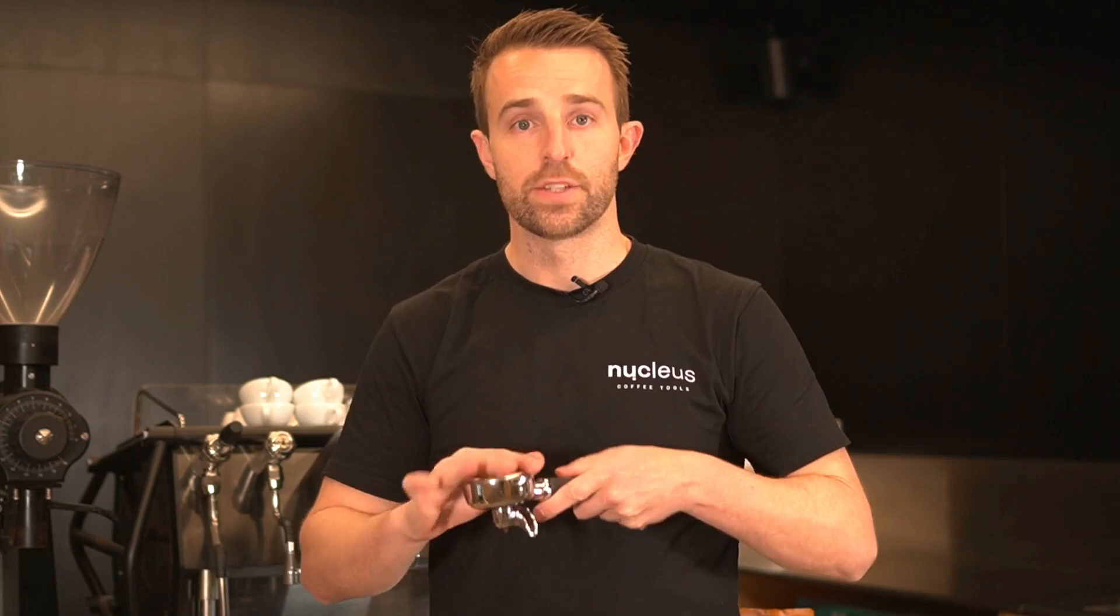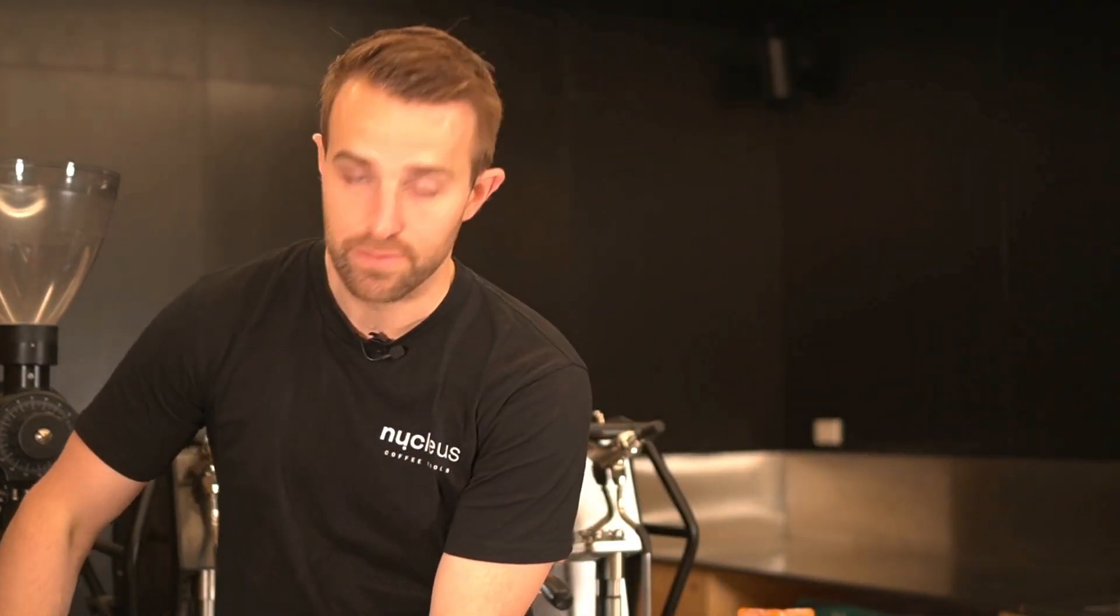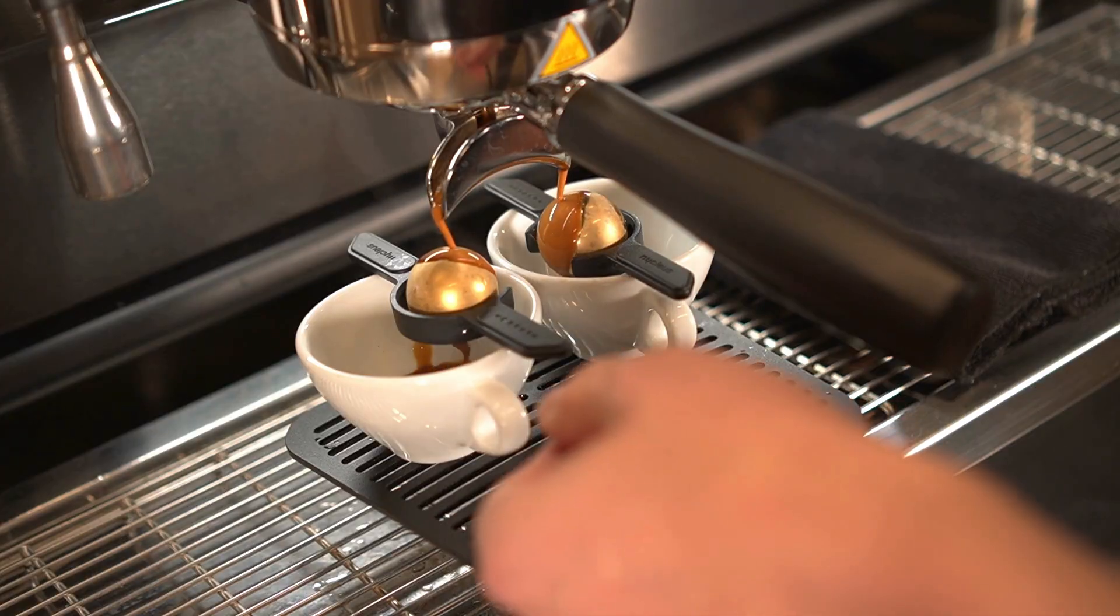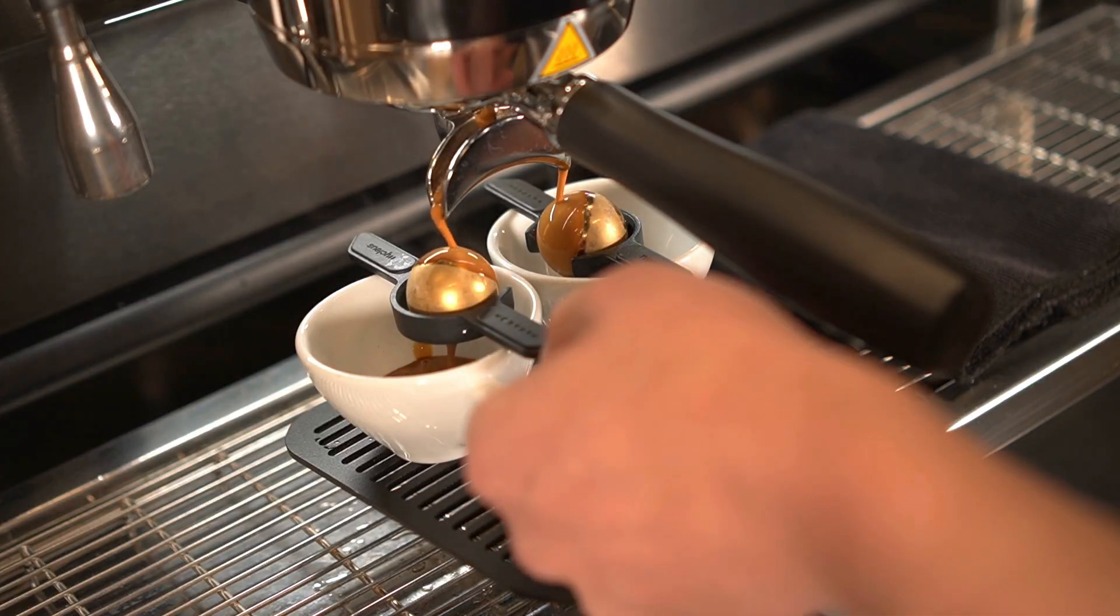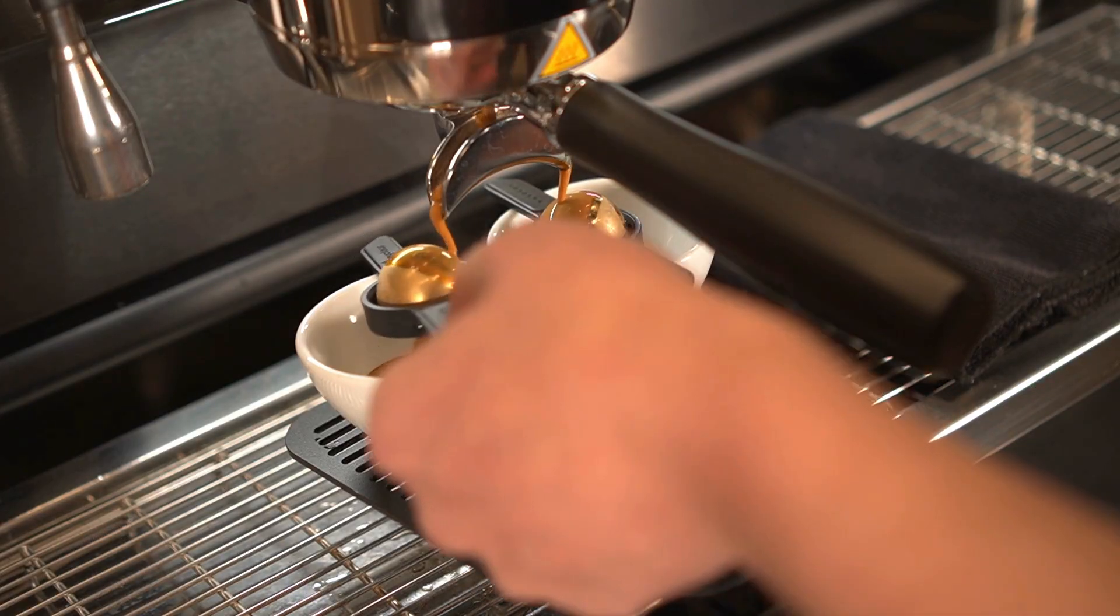Now I'm going to run an espresso of that washed Rwandan. I'll be running a 30% chill versus the entire pour and we'll go through what we taste.